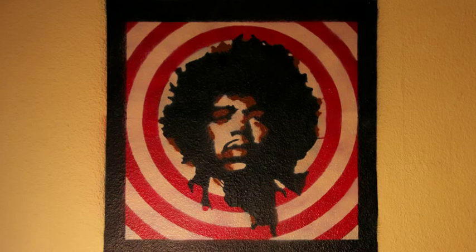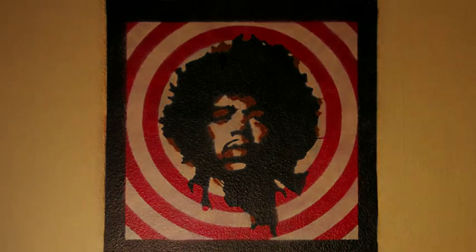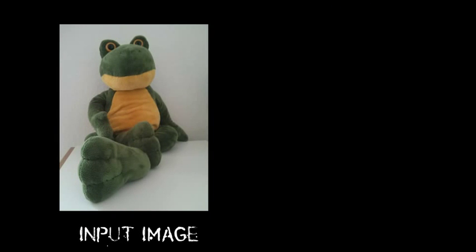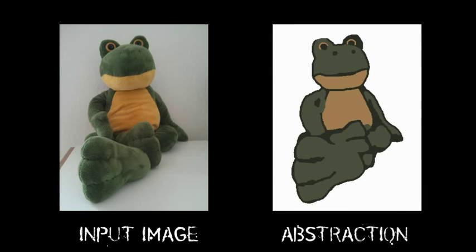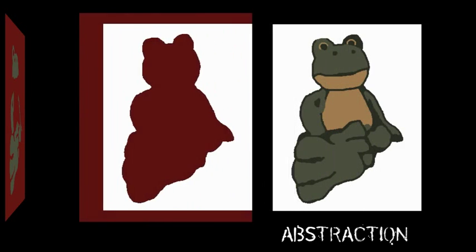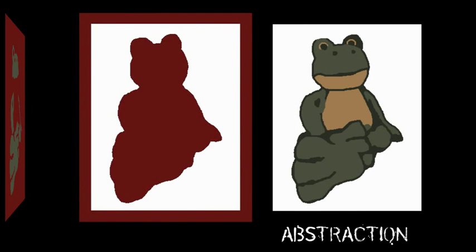Creating stencils without our system is a difficult task. Starting from an input image, the number of colours needs to be reduced. This results in an abstracted image. Each colour of the abstracted image defines a stencil layer. In this example we have four colours, thus four stencil layers have to be created.